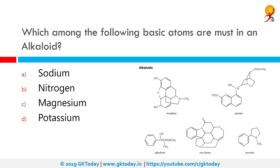Which among the following basic atoms are a must in an alkaloid? The correct answer is nitrogen. An alkaloid is a class of naturally occurring organic compounds that mostly contain basic nitrogen atoms. This group also includes some related compounds with neutral and even weakly acidic properties. Some synthetic compounds of similar structure may also be termed alkaloids.